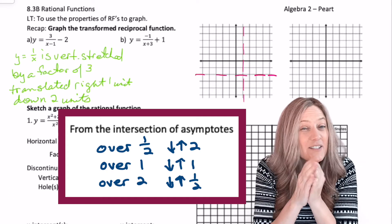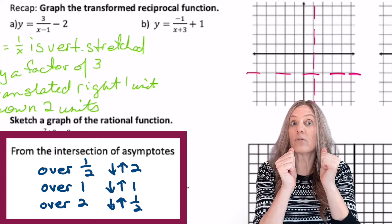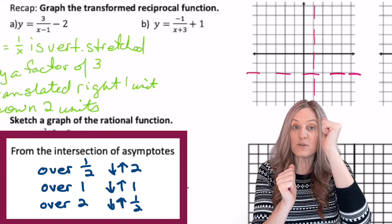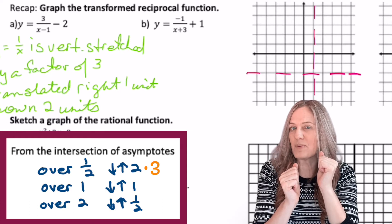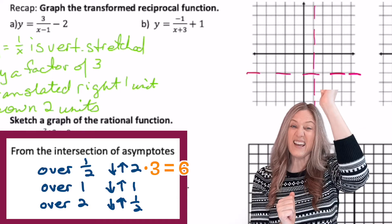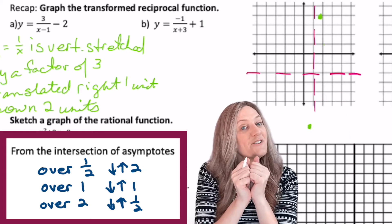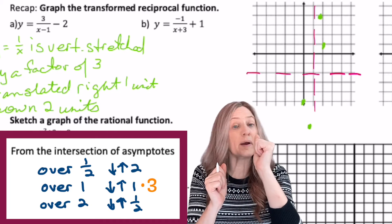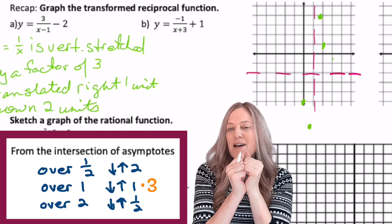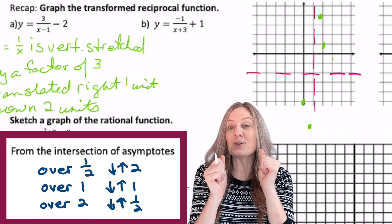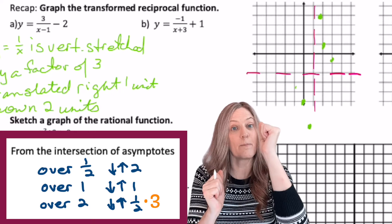Now we have the intersection, but we've been vertically stretched by a factor of three. Normally we'd go over a half, up two, down two, but because it's multiplied by a factor of three, the y values are multiplied by three. Two times three is six. So we're going to go over a half, up and down six. Back to that intersection of the asymptotes, over one, up one, down one, but multiplied by three. So up three, down three, back to the intersection of the asymptotes, over two. And instead of a half, one half times three, so one and a half.